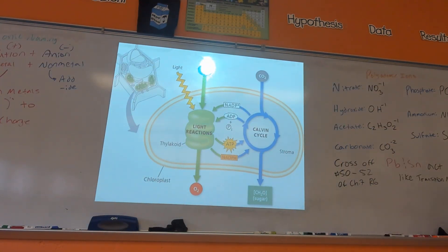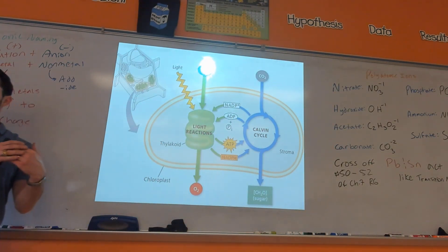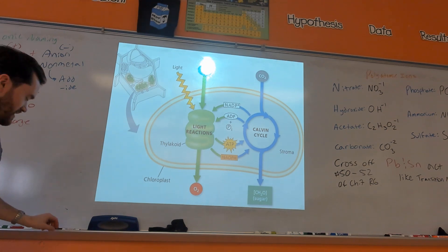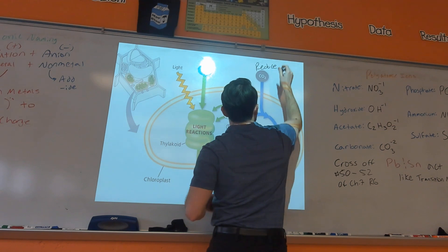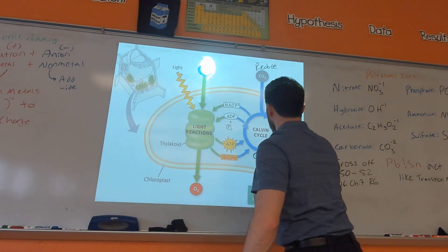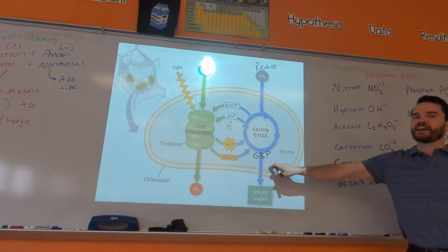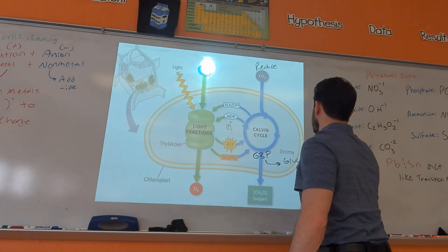Photosynthesis is basically the opposite of cellular respiration. In cellular respiration, we were oxidizing glucose to release energy. Here, we're taking carbon dioxide and we're going to reduce it. Technically, the sugar that comes out is called G3P — glyceraldehyde-3-phosphate. That's the immediate product of the Calvin cycle, and then we have other reactions that take G3P and turn it into glucose.